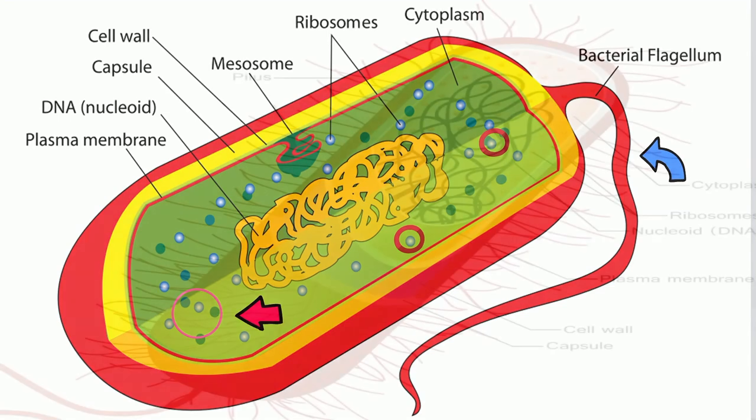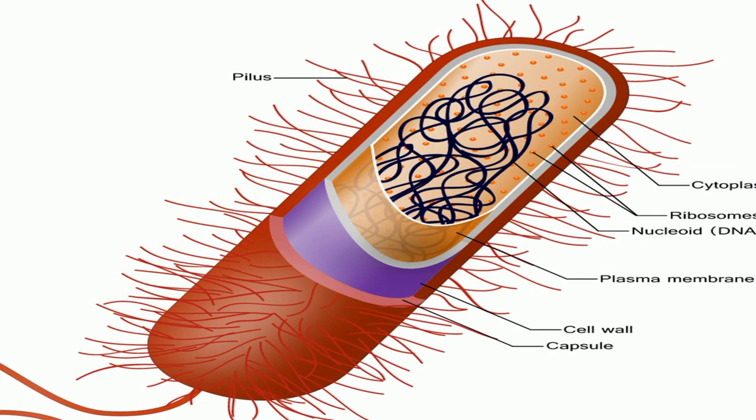Other bacteria have pili, which are small fibers that sprout from the cell surface and help the bacteria attach to certain surfaces.